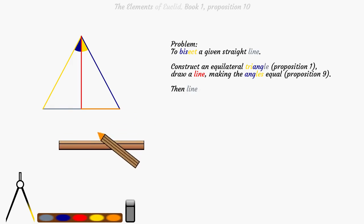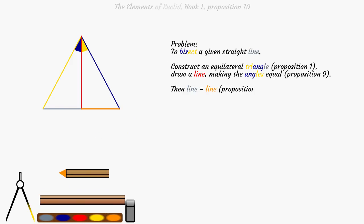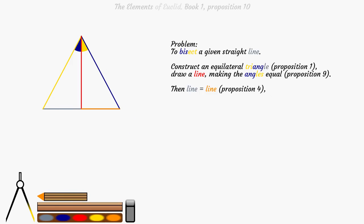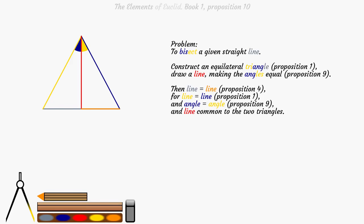Then the grey line is equal to the orange line, Proposition 4. For the yellow line is equal to the blue line, Proposition 1. And the blue angle is equal to the yellow angle, Proposition 9. And the red line is common to the two triangles.